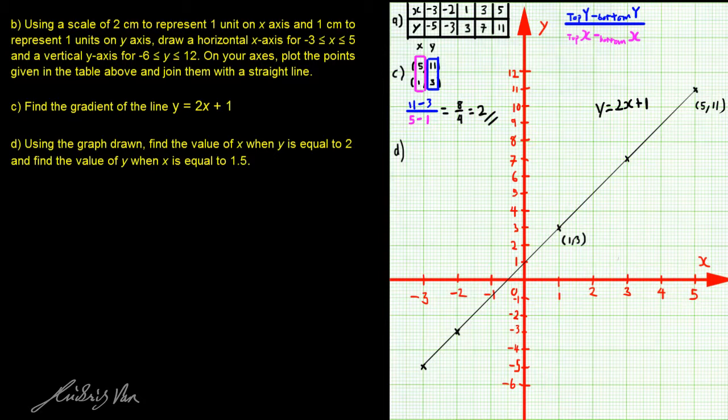For part 1, all we have to do is to draw a dotted line from y equals to 2 to our straight line. Then from the straight line, draw a dotted line towards the x-axis to find the value of x, which is 0.5.